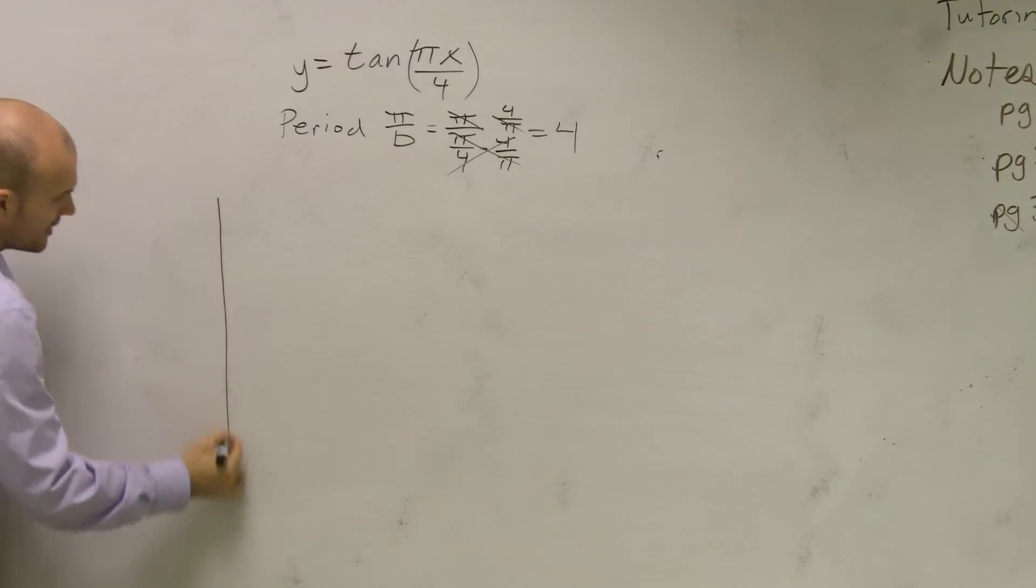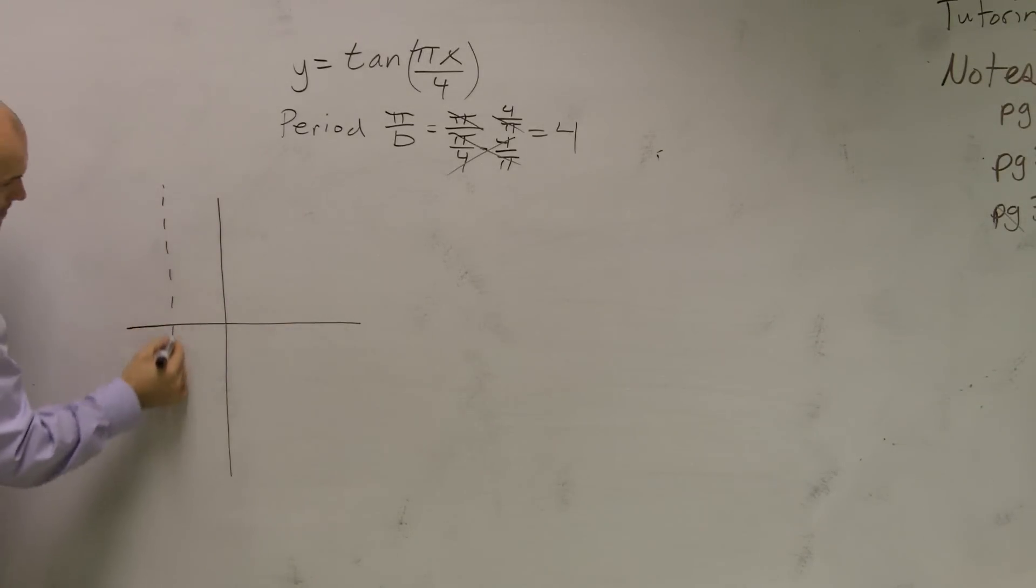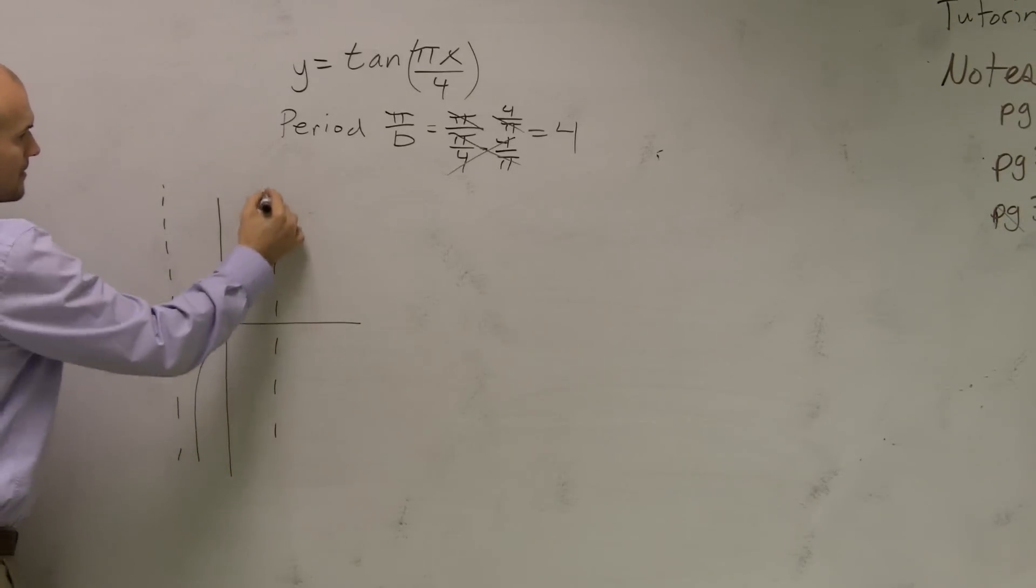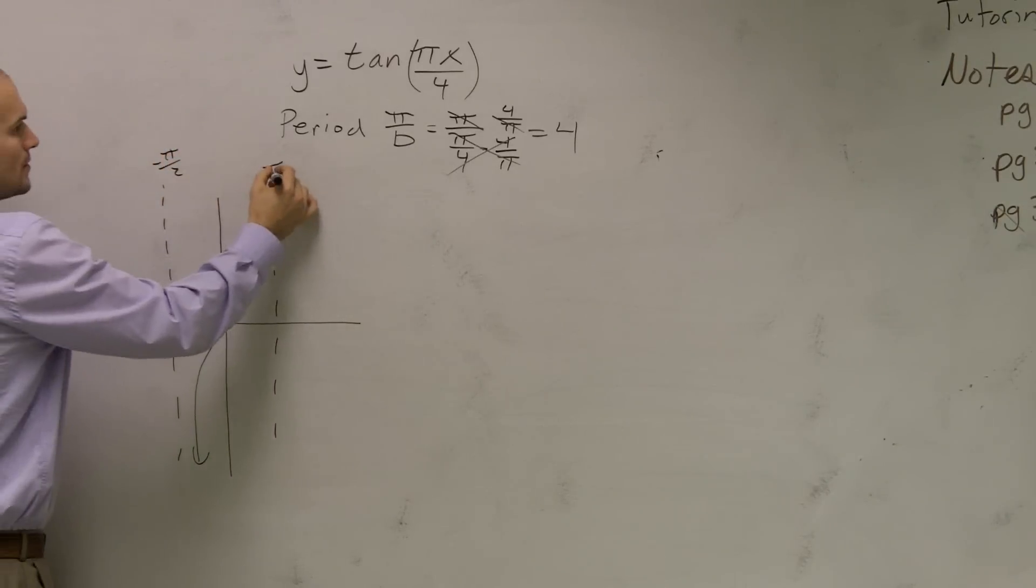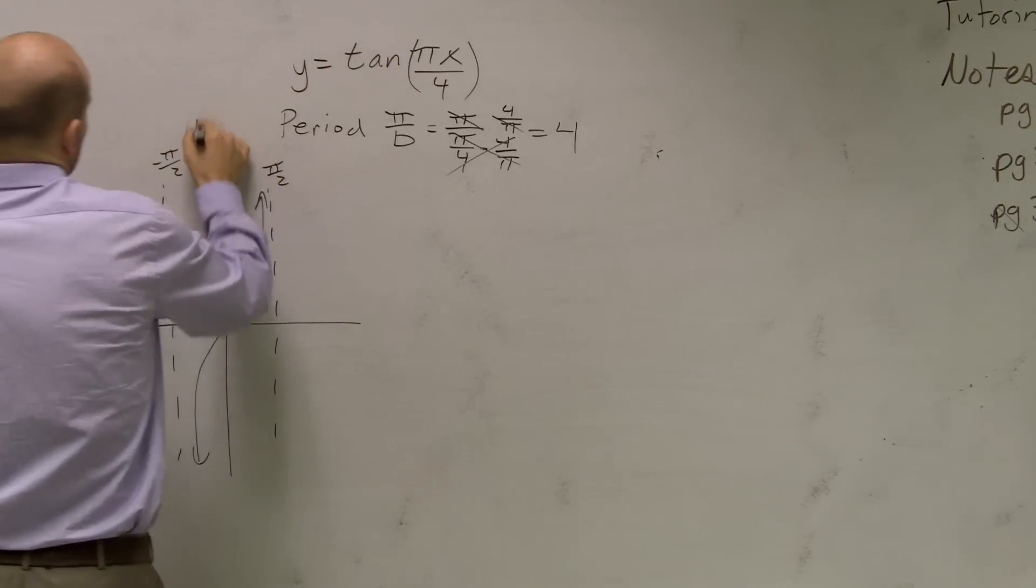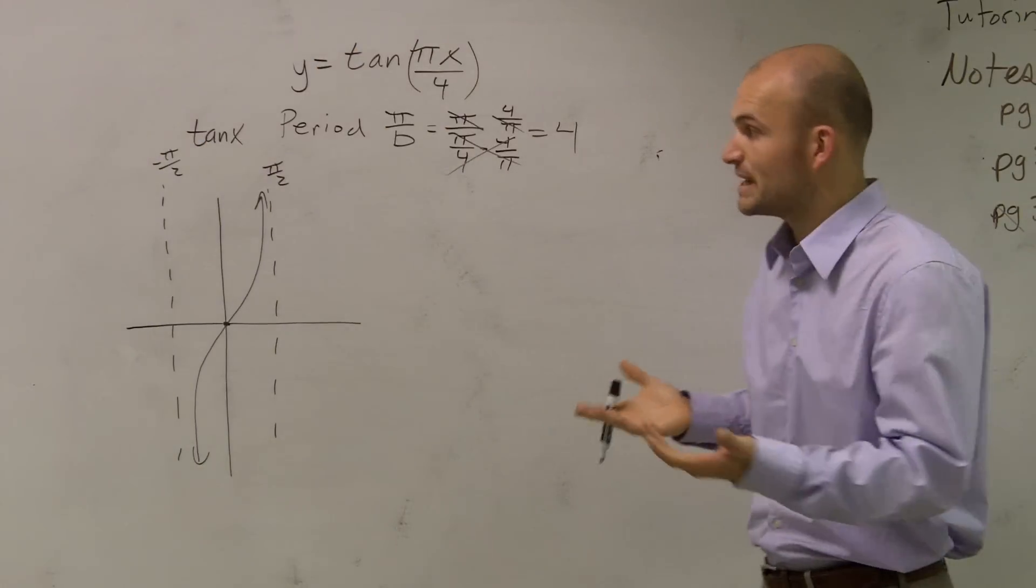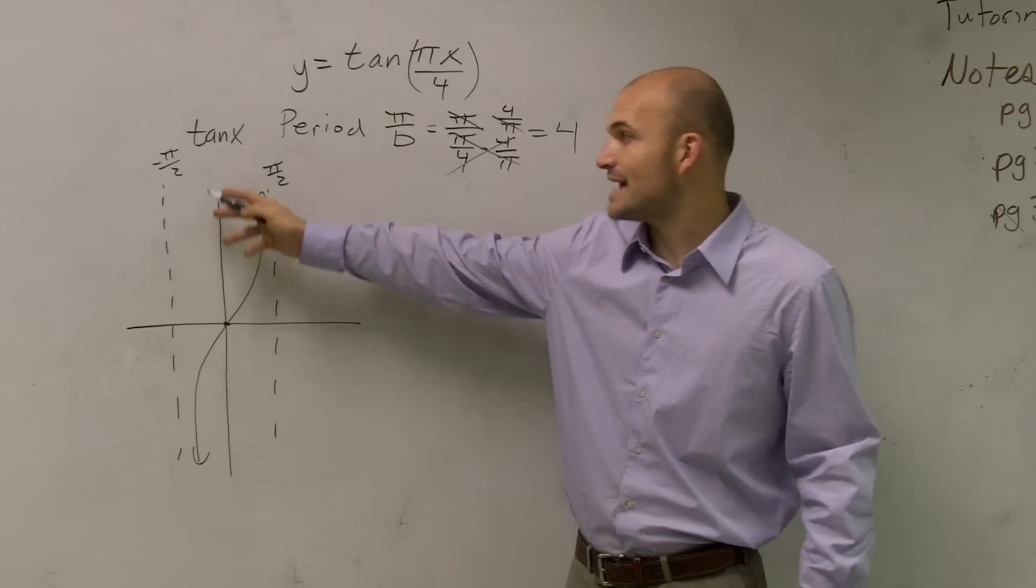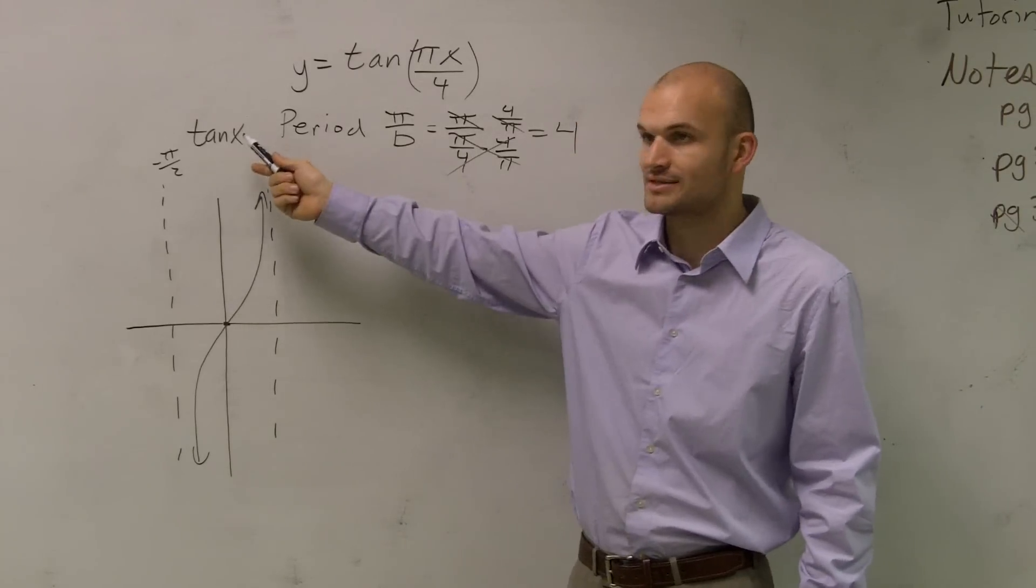For a tangent function, it crosses at (0,0) and has two asymptotes: -π/2 and π/2. That's for the function tan(x) with no transformations. We have an asymptote at π/2 and -π/2 for tan(x).